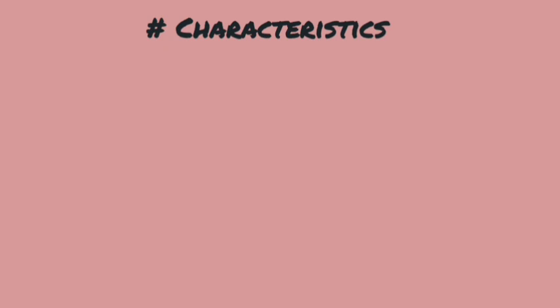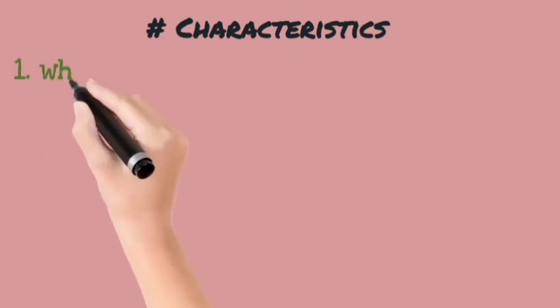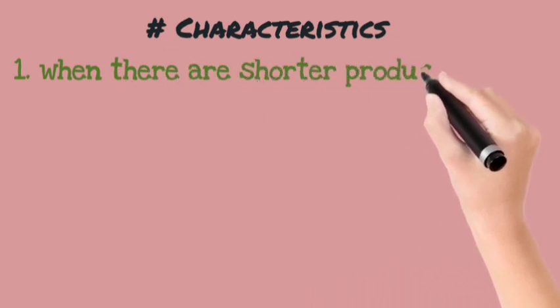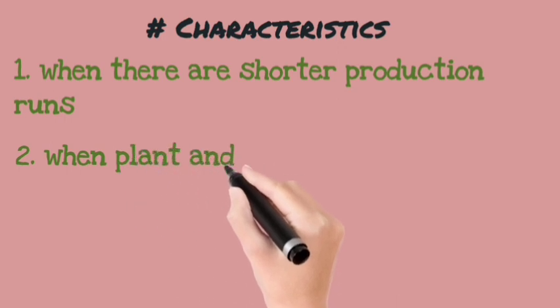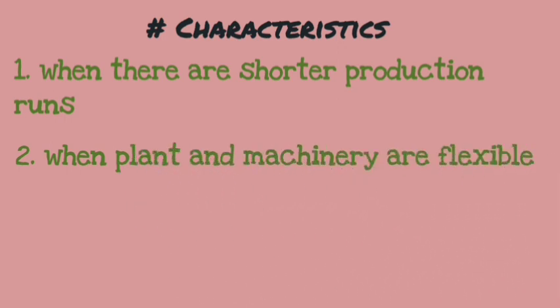We can use batch production in the following situations: First, when your production runs are shorter — the period of time where your machine is operating is called a production run. Second, when your plant and machinery is flexible, meaning you can easily modify or alter it.